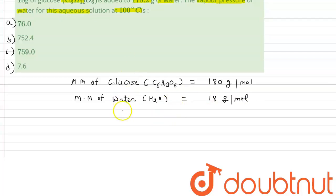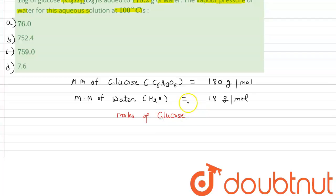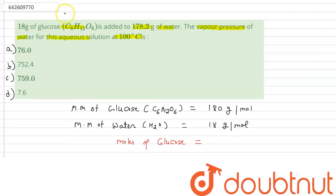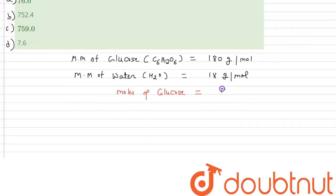Now we have to calculate the moles of glucose. We know that moles are calculated as given mass divided by molar mass. We have 18 grams of glucose, so moles of glucose = 18 divided by 180, which comes out to be 0.1.